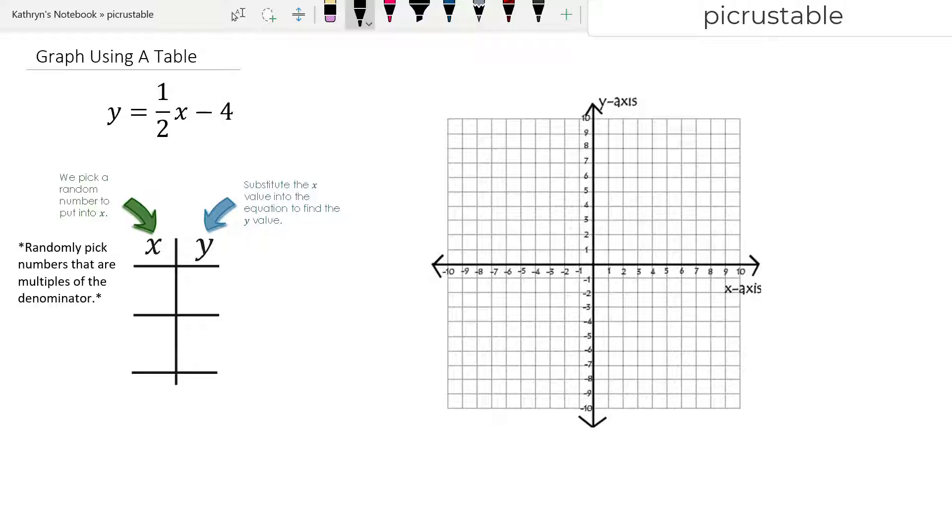Let me show you what happens if I don't pick a multiple of 2. So let's say I have 3. I just picked out 3. So I'm going to put it into my equation, 1 half x minus 4. Now I'm going to put 3 in for x. So we have 3 halves minus 4. We need a common denominator, so we're going to have 3 halves minus 8 over 2. This gives us 3 minus 8 is negative 5 over 2.